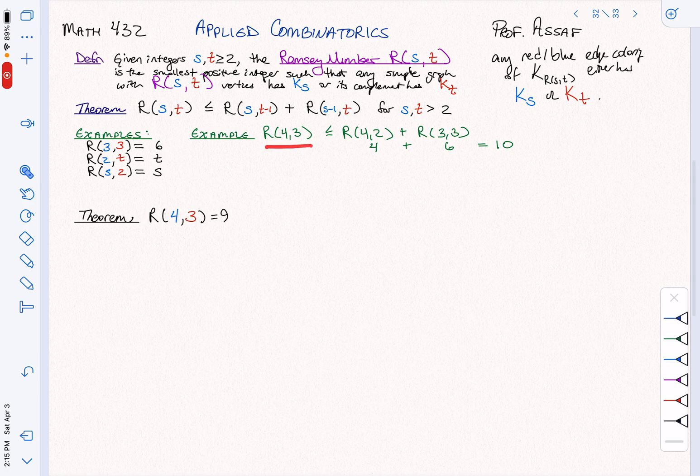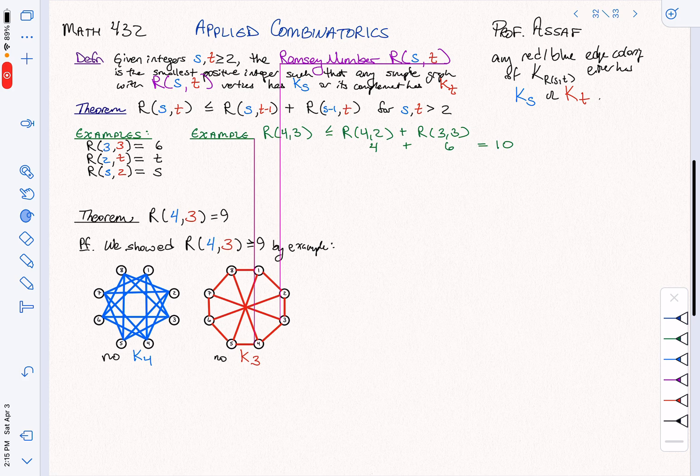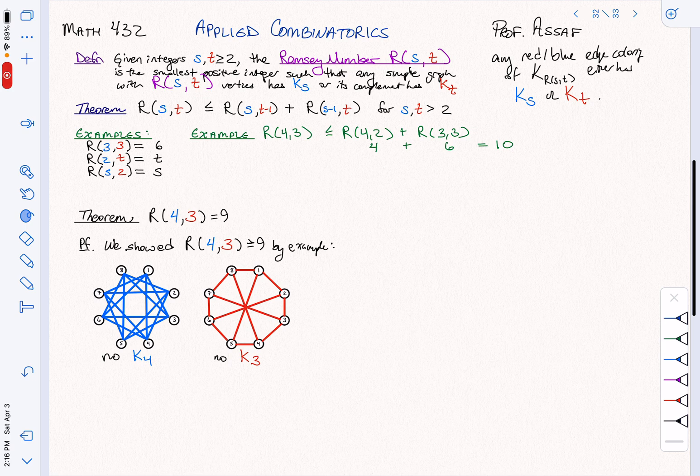We saw from the bound that it's at most 10. Last time we saw, just by example, that it's at least 9. So that means the answer is either 9 or 10. The bound tells us it's at most 10, but in fact it's actually equal to 9.